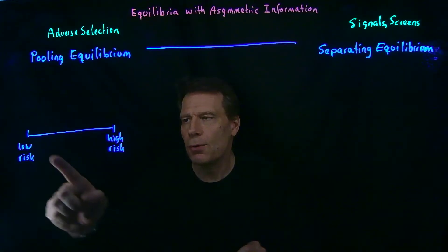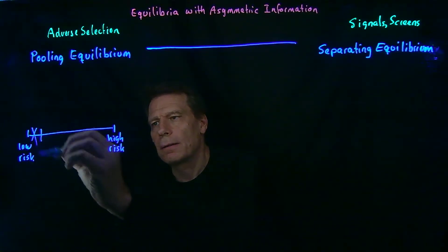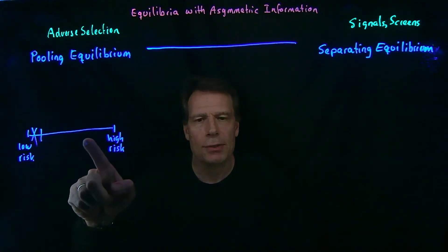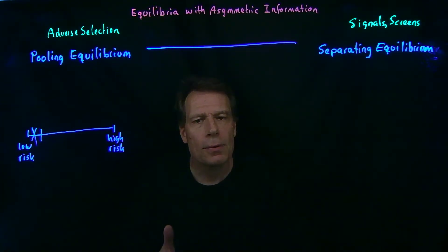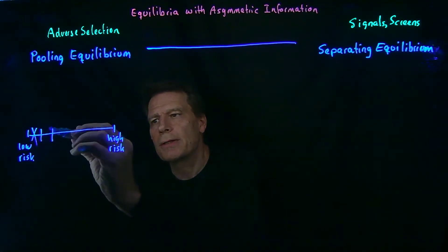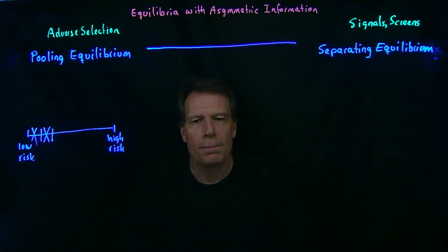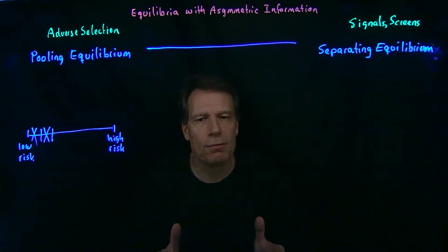That premium is going to be too high for those who have a really low risk of losing their job, so they'll drop out of the insurance market. That gives rise to the adverse selection problem — now a higher-risk pool of employees applies to insurance companies, the premium has to rise, more low-risk employees drop out, and this keeps going. In the extreme case, it could unravel the whole market so that no unemployment insurance ends up being sold in this pooling equilibrium. Of course, it doesn't have to be that extreme, but it could be.